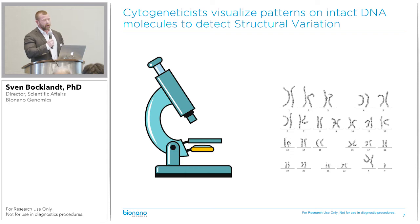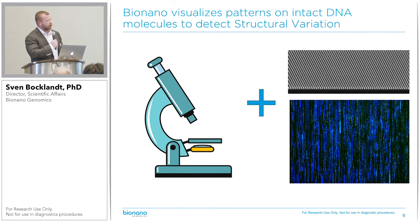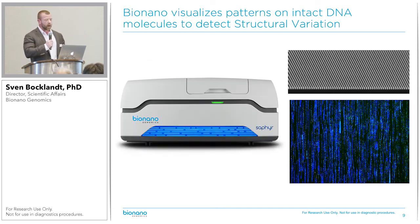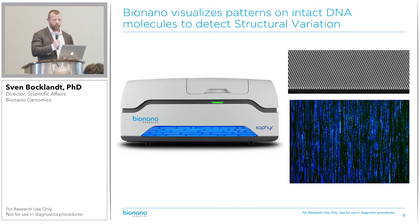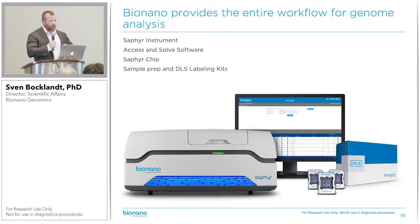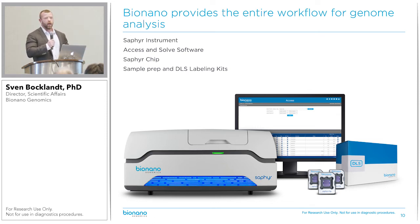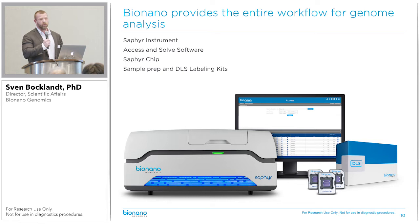The way we do that at BioNano is we add to this system our nano-channel array — hundreds of thousands of parallel nano-channels that can linearize the DNA and image them. Our microscope is called SAFIRE, and it automates this process. So BioNano is an entire workflow: we have the SAFIRE instruments, kits for DNA extraction and labeling, our chips that can linearize the DNA molecules, and our software for analysis.